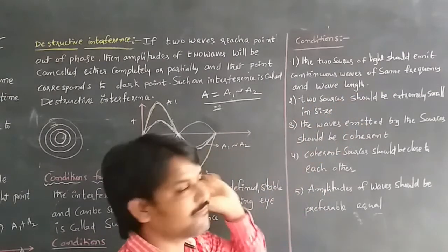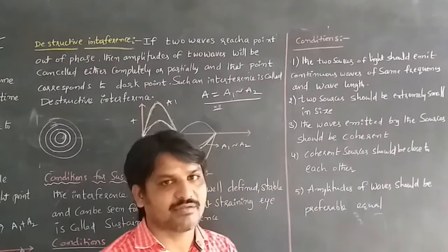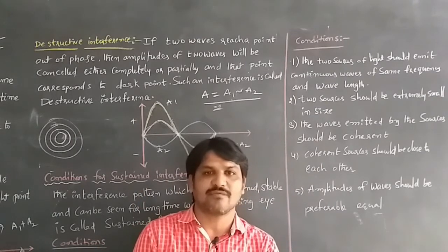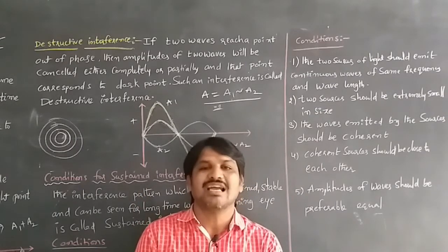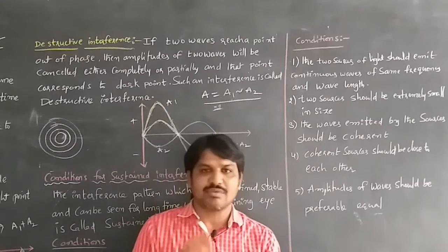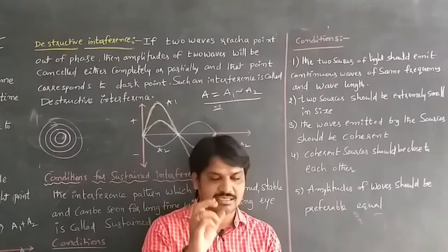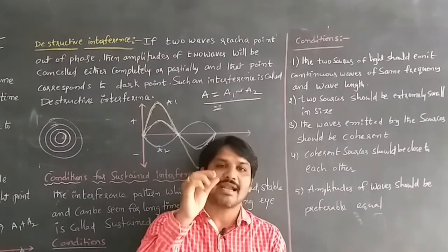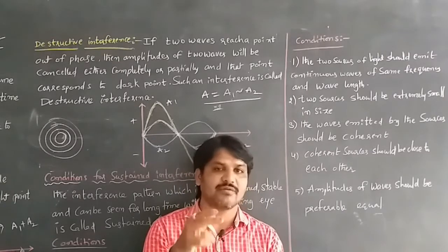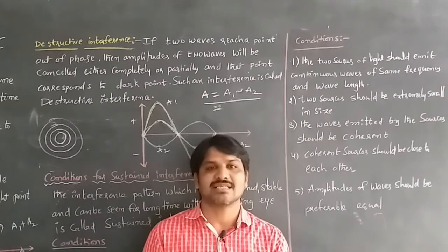Continuous waves of the same frequency and the same wavelength — whenever light of the same frequency and the same wavelength is emitted from the source, that can be stable and well-defined. Our eye can see it for a long time without being sustained, meaning without strain.